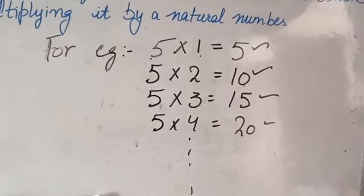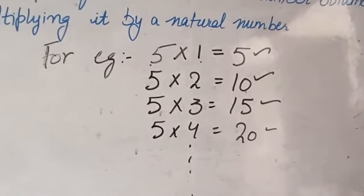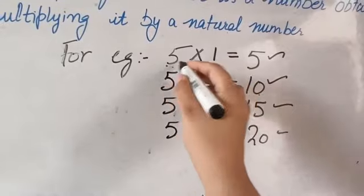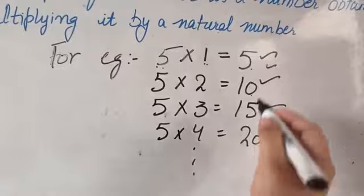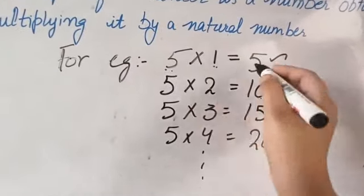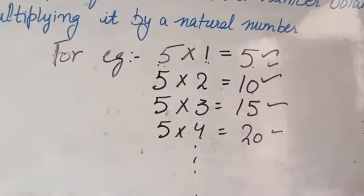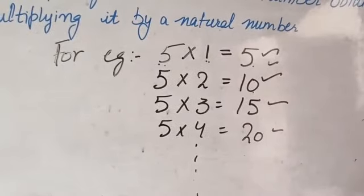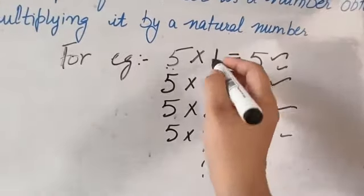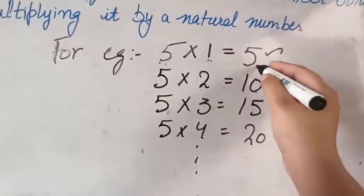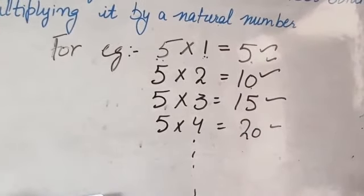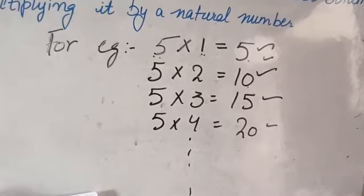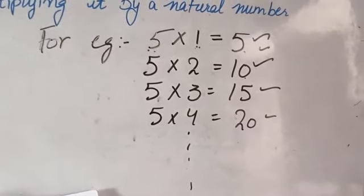So let us understand the factors and multiples. Factors are the numbers that divide the number exactly. If you multiply the number with natural numbers, then the answer will be multiples. So what will the first multiple be? It will be the number itself. Because if you multiply by 1, the answer will be the number itself.